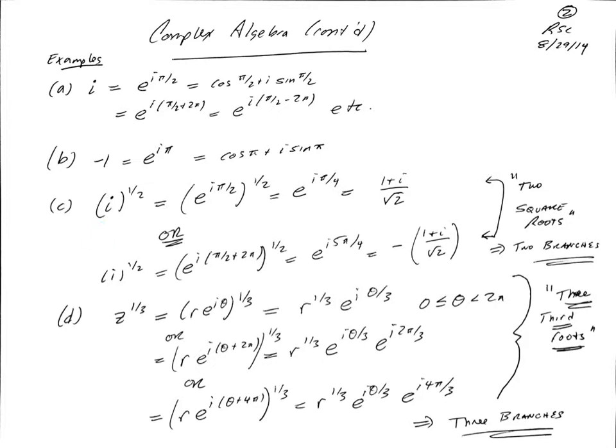So if we think about i to the one-half, if I use this representation, e to the i pi over 2, I get e to the i pi over 2 to the one-half. And remember our rule, when we exponentiate something, we just multiply the exponents, so this is e to the i pi over 4. And we can work this out. It's 1 plus i over the square root of 2. It's worth just doing a little algebra to show that 1 plus i over 2 squared actually gives you i when you square it.